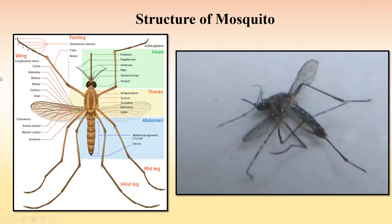Looking at the anatomy, this mosquito has four legs — one, two, three, four patterns are visible. This is the head portion, this is the wing portion, and every mosquito's wings are different. Two different wing types are shown here.